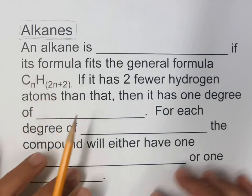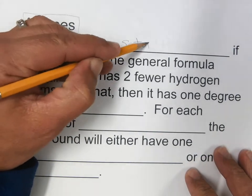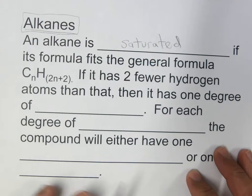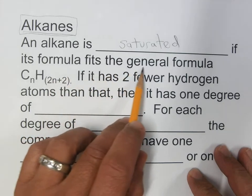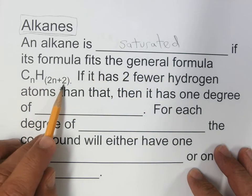So an alkane is saturated, which means it has the maximum number of hydrogens that it could have if its formula fits the general formula CnH2n+2.